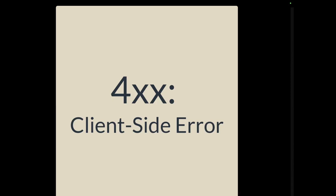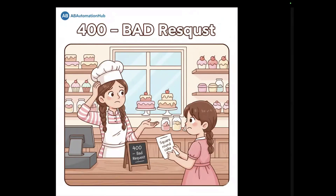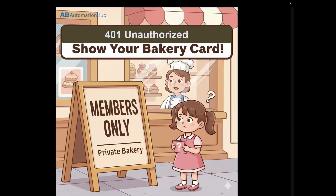The next family is 4XX — client errors. The 4XX codes mean the problem was caused by the customer's request. The first one is 400 Bad Request: a customer orders a 'square round cake' and you get confused because the request is malformed — you can't have both square and round, it can be either one. That's a bad request. Next is 401 Unauthorized: you try to order from a members-only shelf without a membership card. You are not allowed without a bakery card — that's 401 Unauthorized.